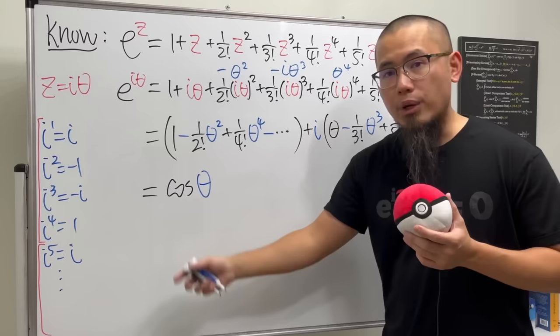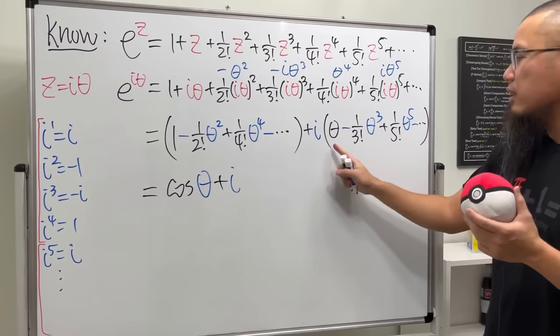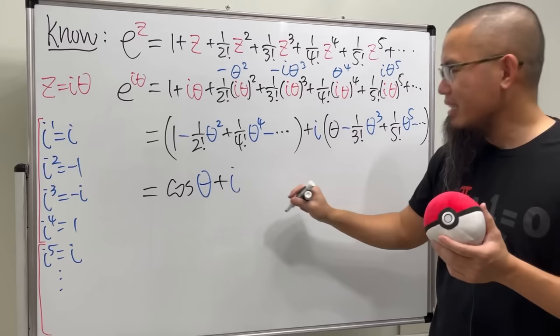And then we add. Here we have the i. And if you look at this parentheses, we see this is alternating. And we have the odd numbers. And this right here, yes, is exactly sine theta.